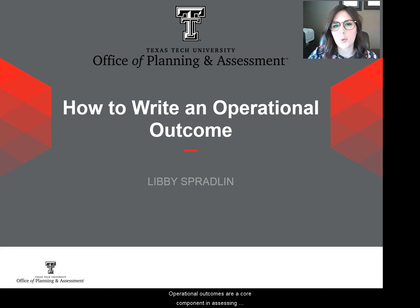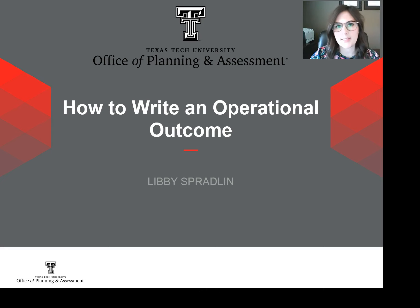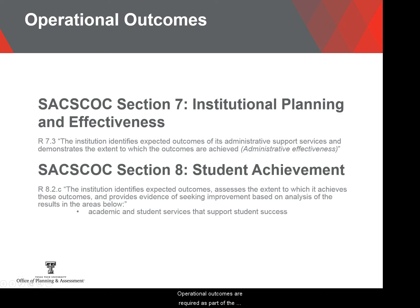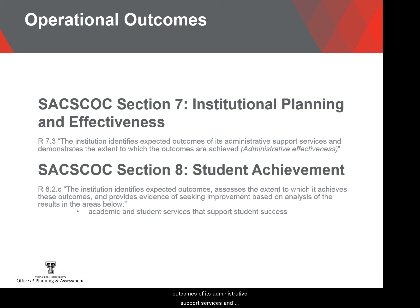Operational outcomes are a core component in assessing institutional effectiveness activity. Operational outcomes are required as part of the SACSCOC Principles of Accreditation in two sections. Standard 7.3 states the institution identifies expected outcomes of its administrative support services and demonstrates the extent to which the outcomes are achieved.